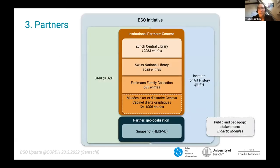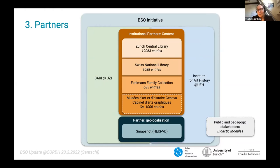As for our partners, we are working with content from the Zurich Central Library, the Swiss National Library, the Filman family collection itself, and currently we're also in conversation with the Musée d'art et d'Histoire, the Art and History Museum of Geneva, especially their graphic cabinet. Our partner for the geolocalization workflow is Snapshot. The initiative contains two parts: SARI on one hand, and the Institute for Art History on the other, who is also working with public and pedagogic stakeholders and planning didactic modules.